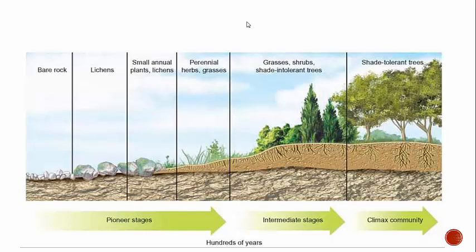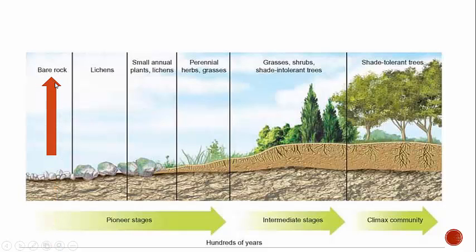Here we have a picture — something you might see on your state assessment. We're trying to figure out: is this primary or secondary succession? There either was life there or there wasn't — no in between. Looking at this diagram, I see bare rock at the beginning — nothing living there. Then we have lichen appearing, and it proceeds until we have a climax community of trees. Because it was bare and there was nothing living there, we have a pioneer species and it's the first time something's coming in. So I know right away it's primary succession.